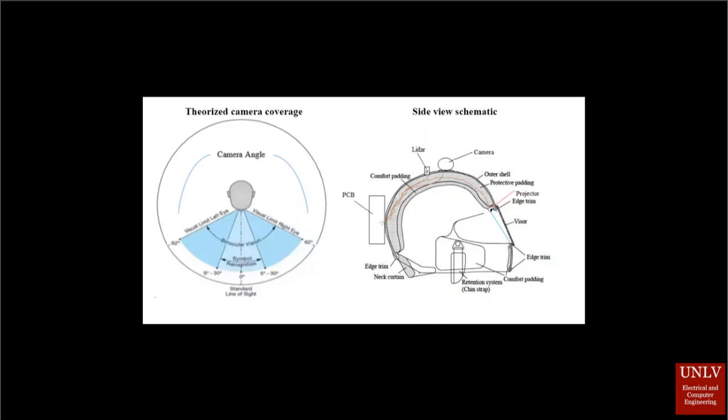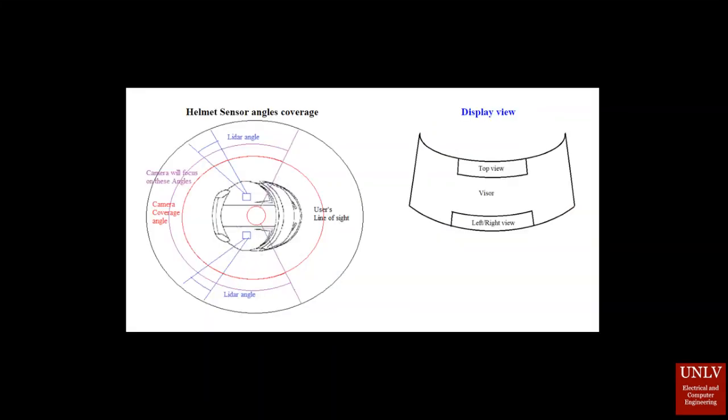The Interactive Helmet provides motorcyclists with a safer riding experience by allowing users to monitor their surroundings on a head-up display. The main function is to display and monitor blind spots, and alert users if there are obstructions in areas where the user cannot see, helping to prevent accidents.